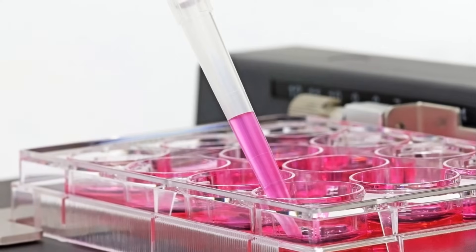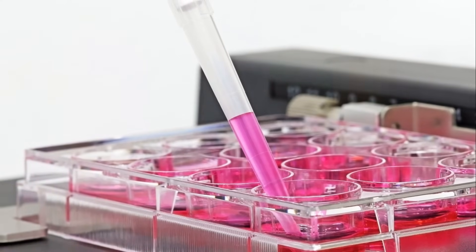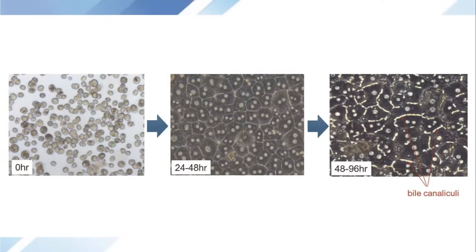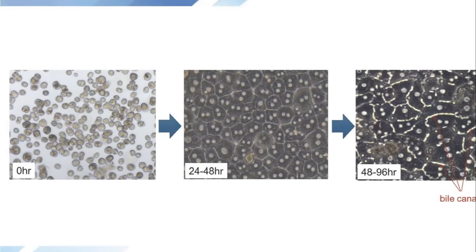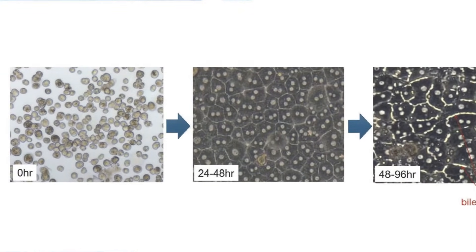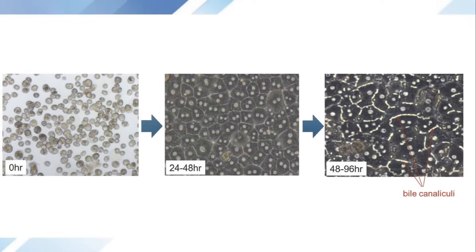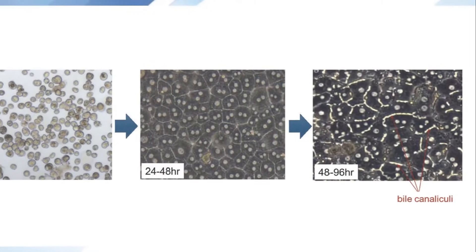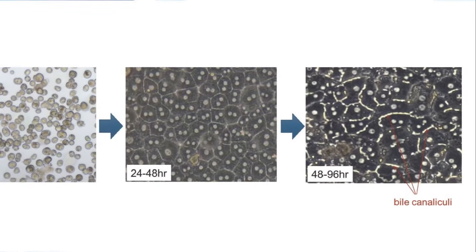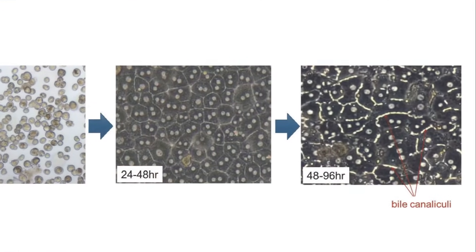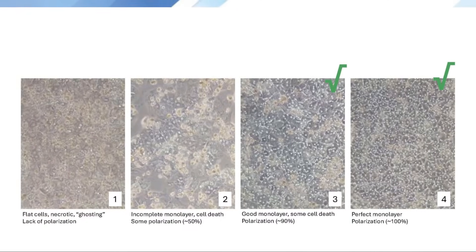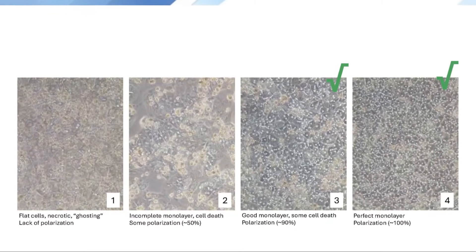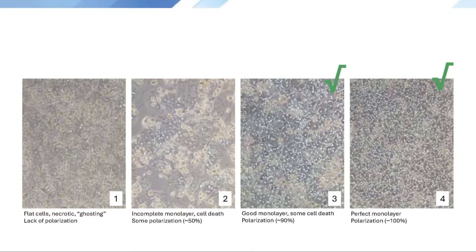Then assess plating efficiency. Plate cells on a collagen matrix at a density of roughly 800,000 to 1 million cells per milliliter, and observe how well the cells settle and spread. An efficient monolayer within 48 hours is a promising sign. At 48 to 96 hours, the cells should start forming bile canaliculi — this is when bile begins being excreted, and that is a marker of cell polarization. Next, compare hepatocytes from different lots, looking for cells that plate efficiently, polarize, and demonstrate functional bile canaliculi. These are your prime candidates for further testing.